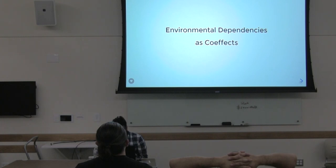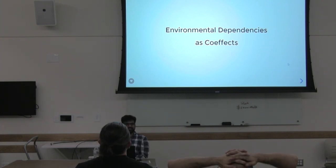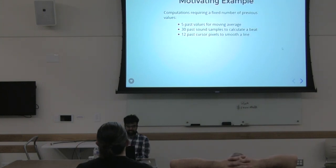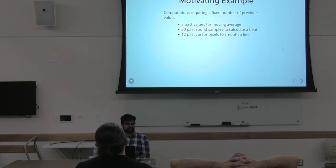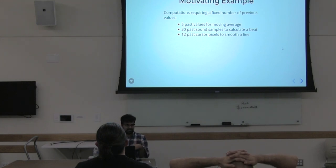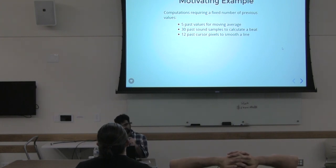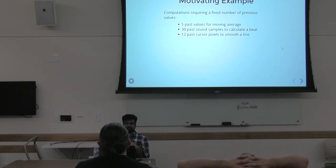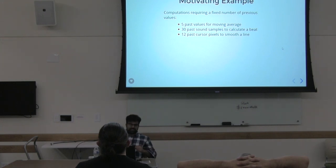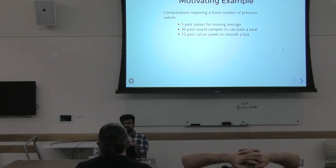My talk is on environmental dependencies as co-effects. To start with some motivating examples: suppose we have computations that are processing a stream and require a fixed number of previous values. For example, calculating a moving average might require five past values, computing a beat from a stream of sound samples might need 30 past samples, or a graphics editor might need at least 12 data points to get the smoothing right on cursor movement.